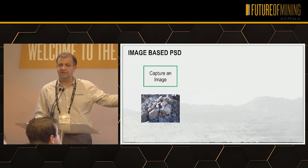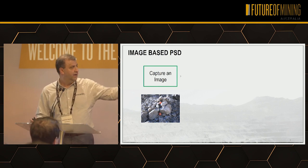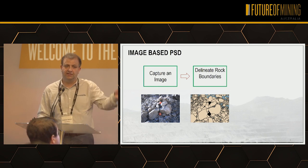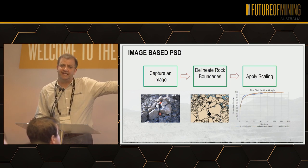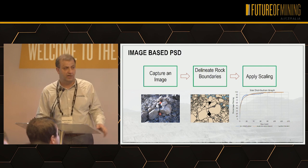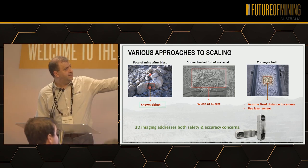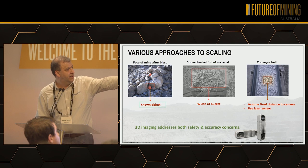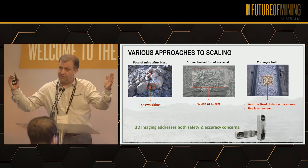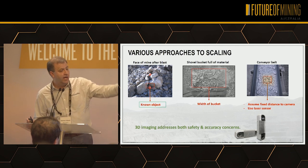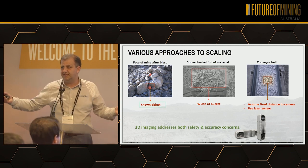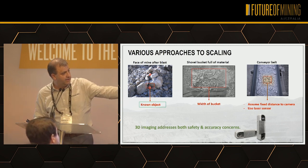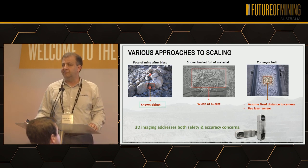What is image-based particle size distribution? You take a picture, you trace the rocks — it could be human-based or automatic — and you apply scaling. In this image they are using basketballs for scaling, with some simplification process, and then you get particle size distribution. For scaling you could use known objects. In the middle I'm using the bucket width, which is typical for our application. On the right-hand side you see a conveyor belt where we assume the camera is at a fixed distance, say two meters, or we can use laser.